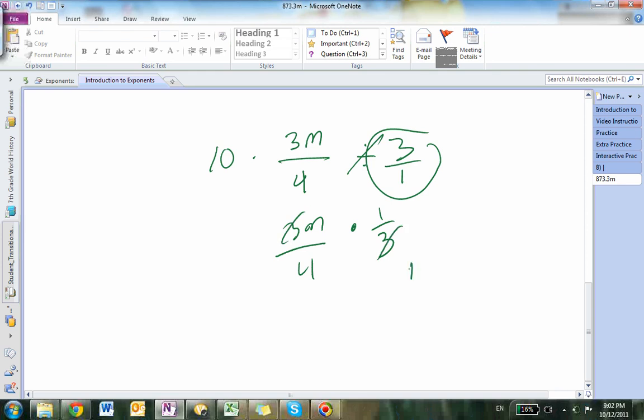If you cross-cancel, it would be 1, 1m. And then 1m times 1 would equal 1m over 4 times 1, which equals 4. So it would be 1m/4.